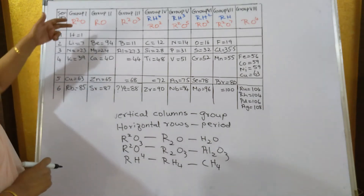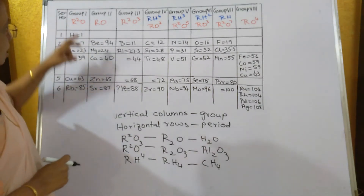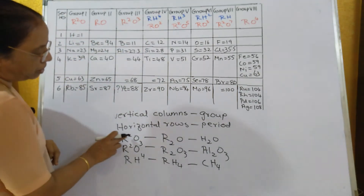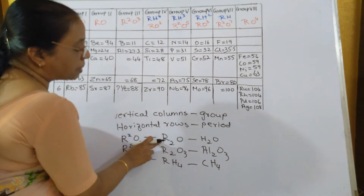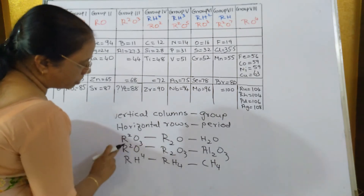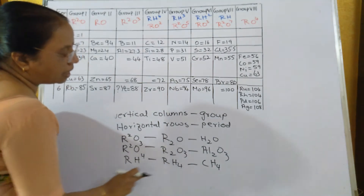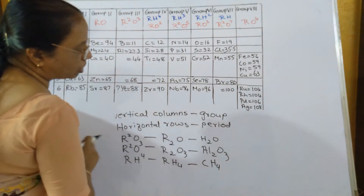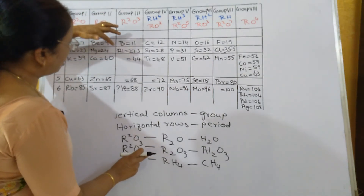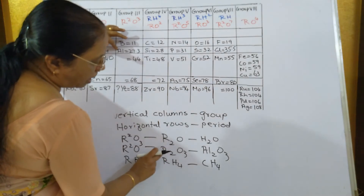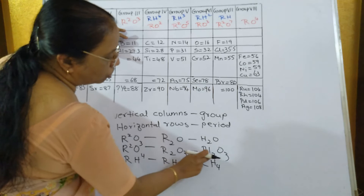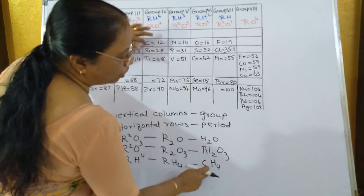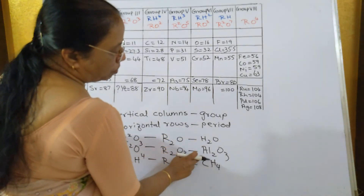Molecular formula of hydrides of elements aur molecular formula of oxides of elements. R2O, R2O3, RH4 — ye teen liye. Agar R2O mein H dalte hain toh H2O milta hai. Aluminium ke liye Al2O3 milta hai. Carbon ke liye CH4 milta hai. Yeh water hai, yeh aluminium oxide hai, aur yeh methane hai.